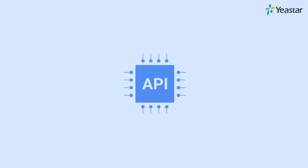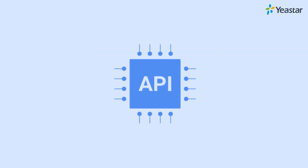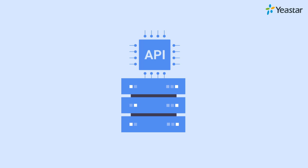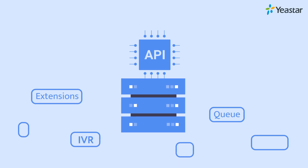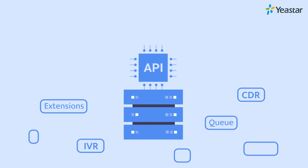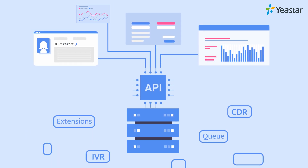Actually, what API can do is more than that on an IP PBX. An IP PBX provides multiple call features such as extensions, IVR, and CDR. API interfaces help to integrate them into a third-party platform.